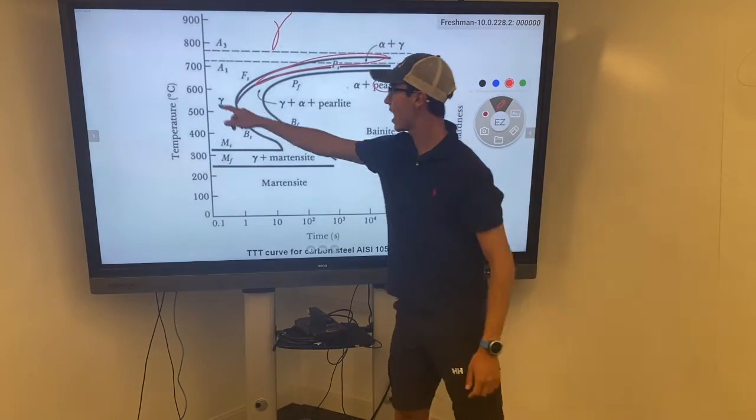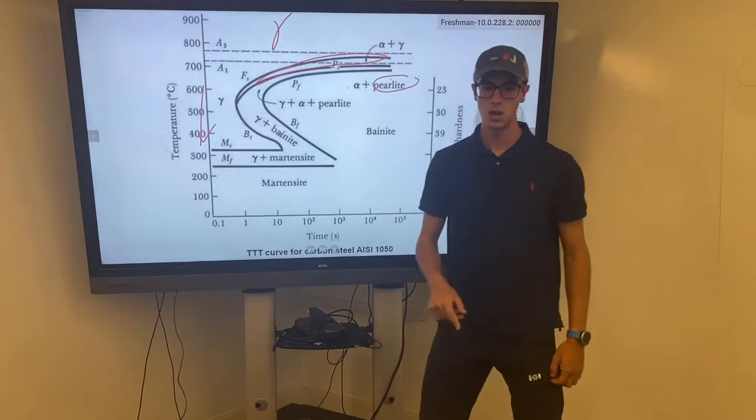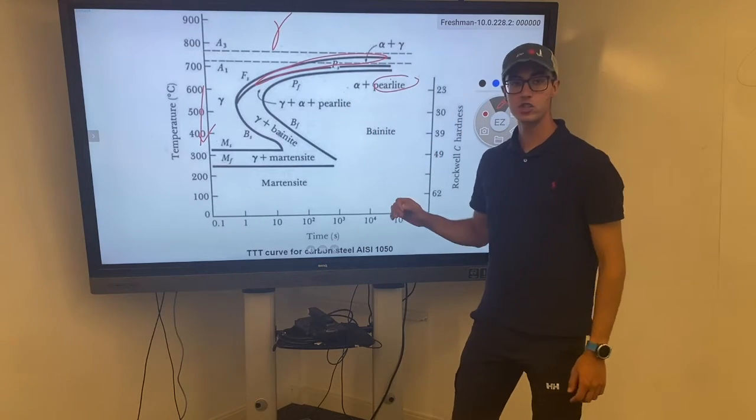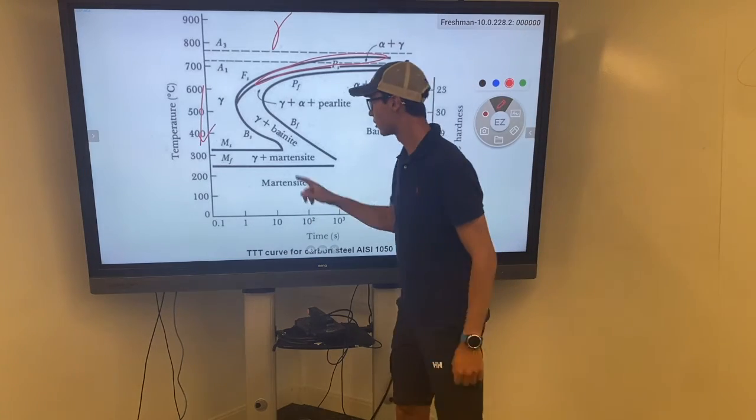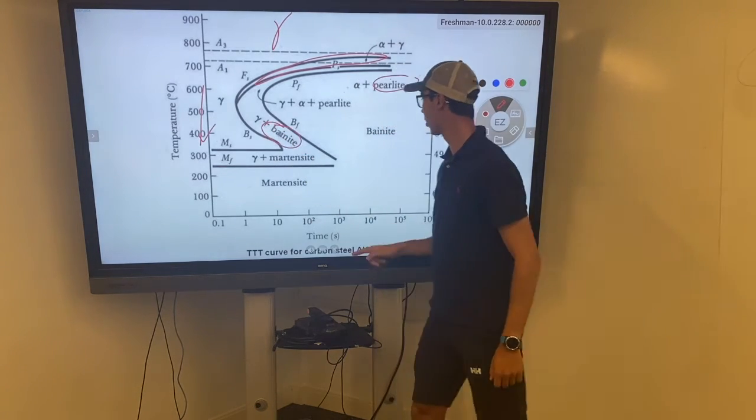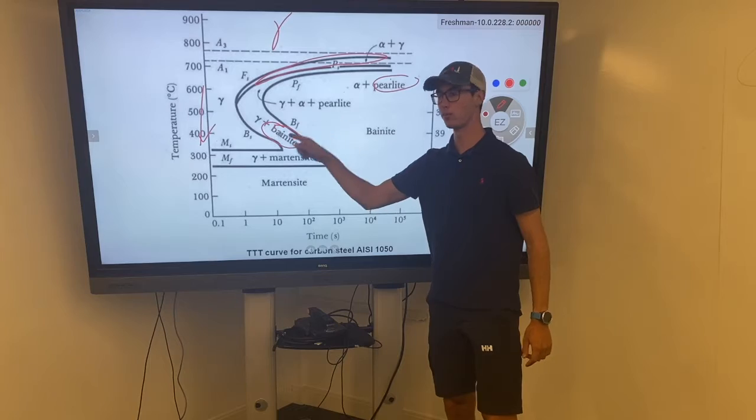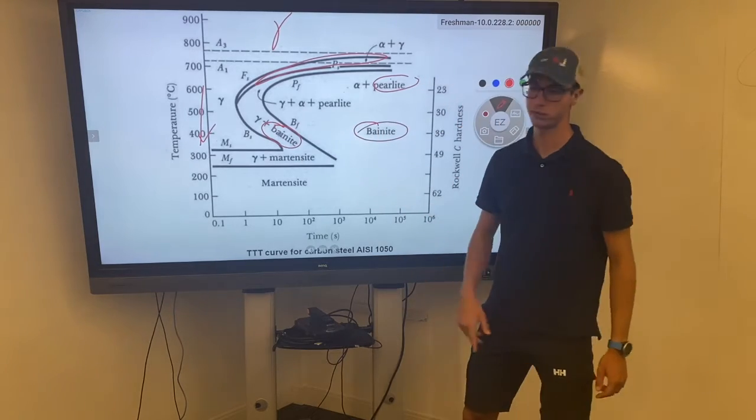Now, as we lower the isothermal temperature, we achieve higher strength and lower ductility within the steel. And this leads to the formation of bainite. Now bainite could be seen forming here, here, over here, it's fully formed.